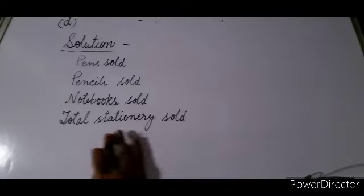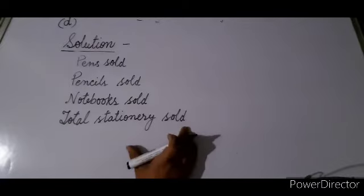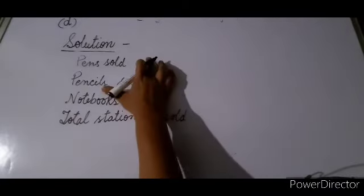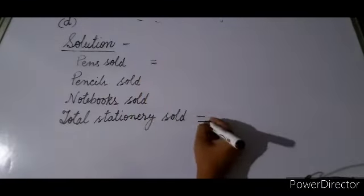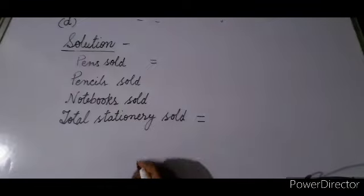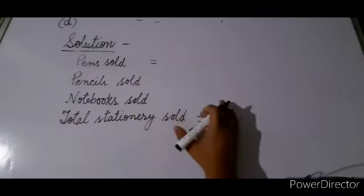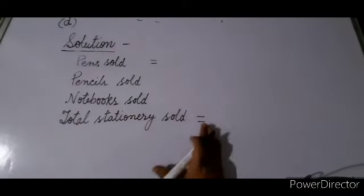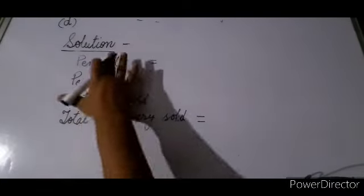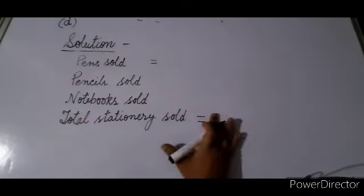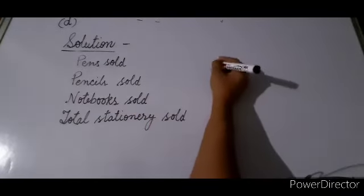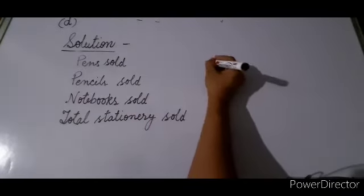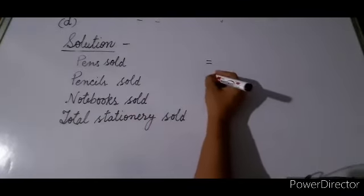The last line is long. If you put the equal sign on the first line, the equal signs won't align. So put the equal sign only after writing all the complete statements. Put the equal sign from here.